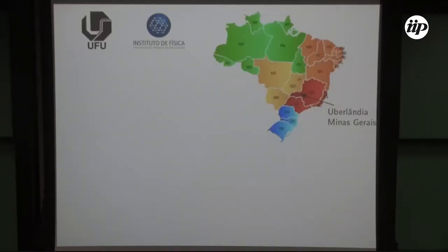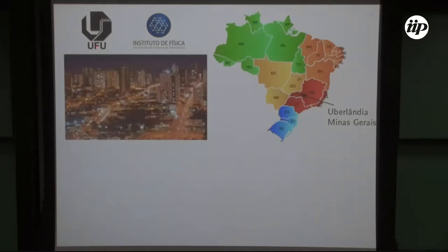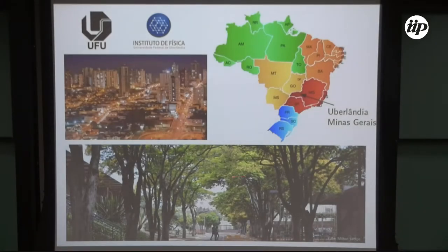Uberlândia is not a well-known city in Brazil — it's around here, a little bit above the São Paulo state, around 800 kilometers from São Paulo city. It's a nice, very clean, very safe city with around 800,000 inhabitants. The campus is quite beautiful during summer and during winter. If you go there right now it's the dry season so everything is gray, but during the summer it's quite beautiful, and the summer lasts for seven months.